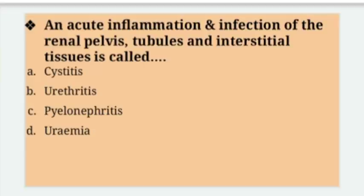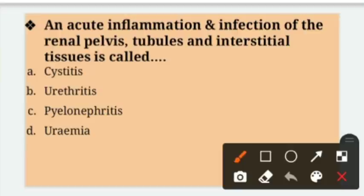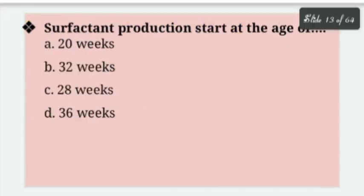An acute inflammation and infection of the renal pelvis, tubules, and interstitial tissues is called — renal pelvis, tubules aur interstitial tissues ki acute inflammation or infection ko kya kaha jata hai? Options: Cystitis, Urethritis, Pyelonephritis, Uremia. Right answer is option C — Pyelonephritis; it is an infection and inflammation of the kidney tissues, renal pelvis — a kind of bacterial infection.